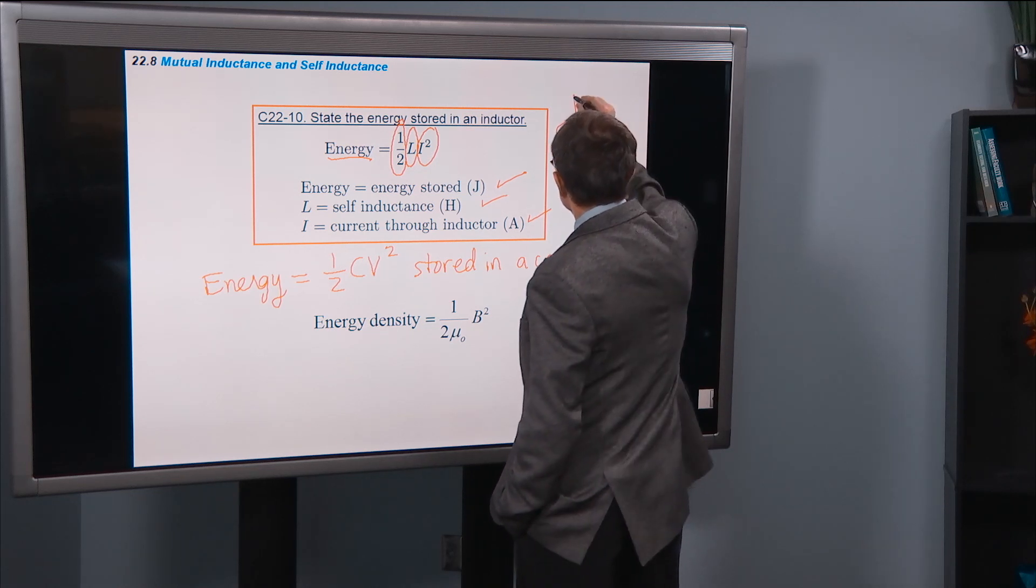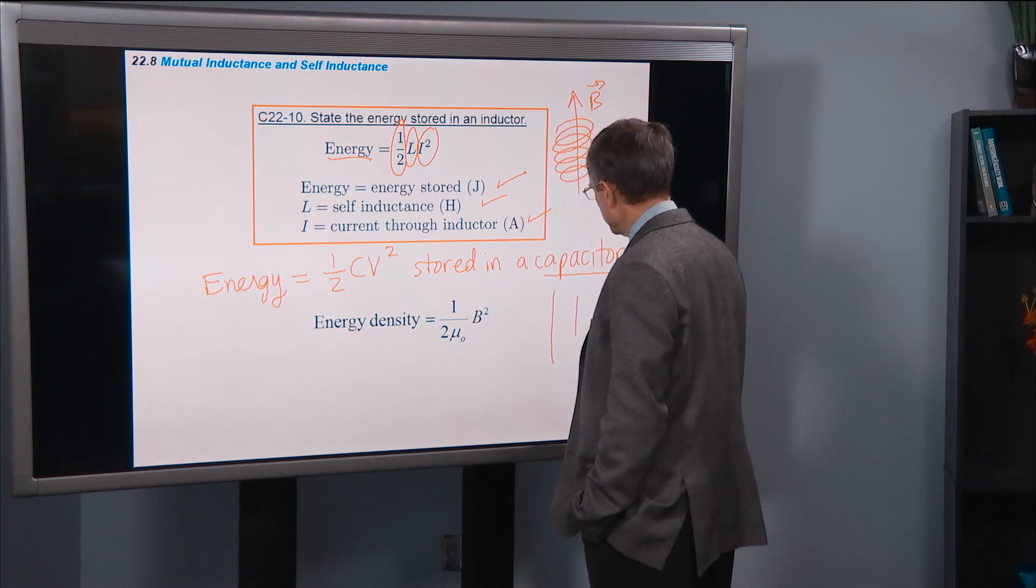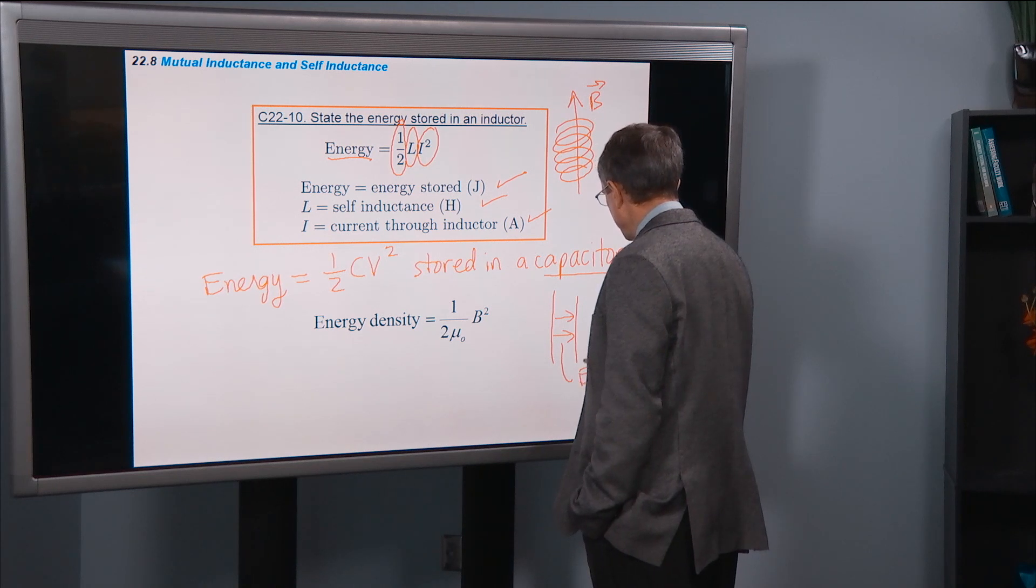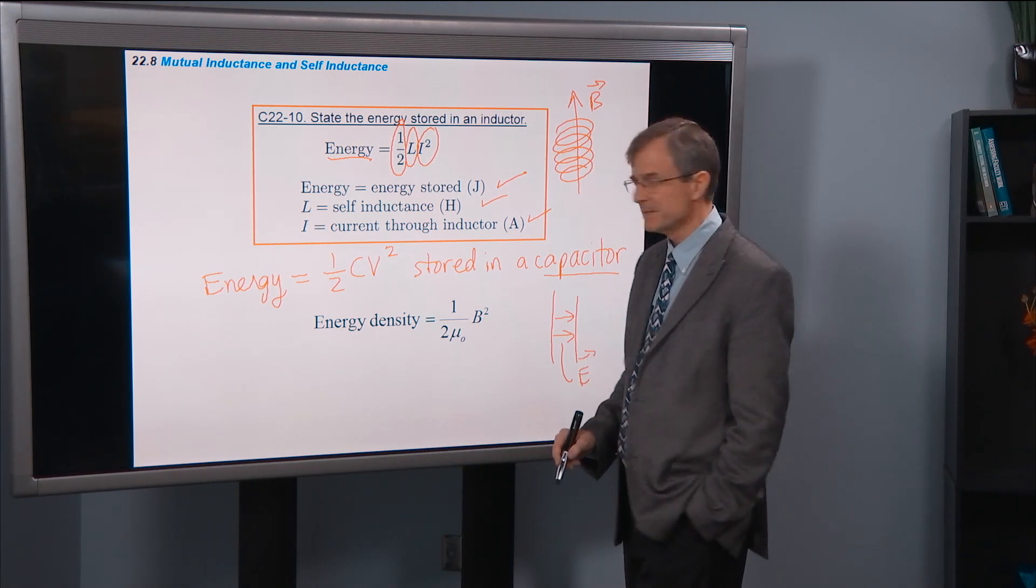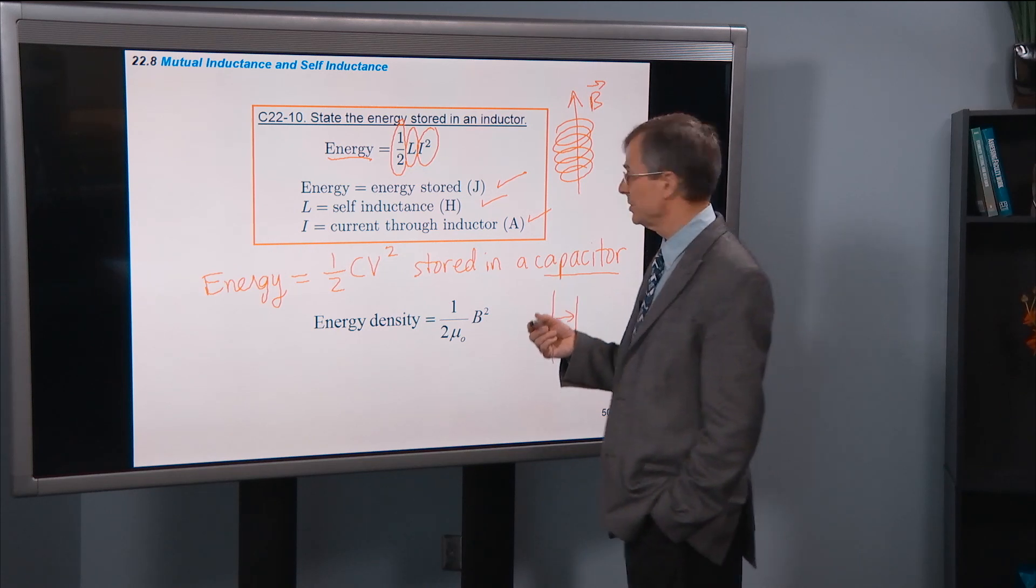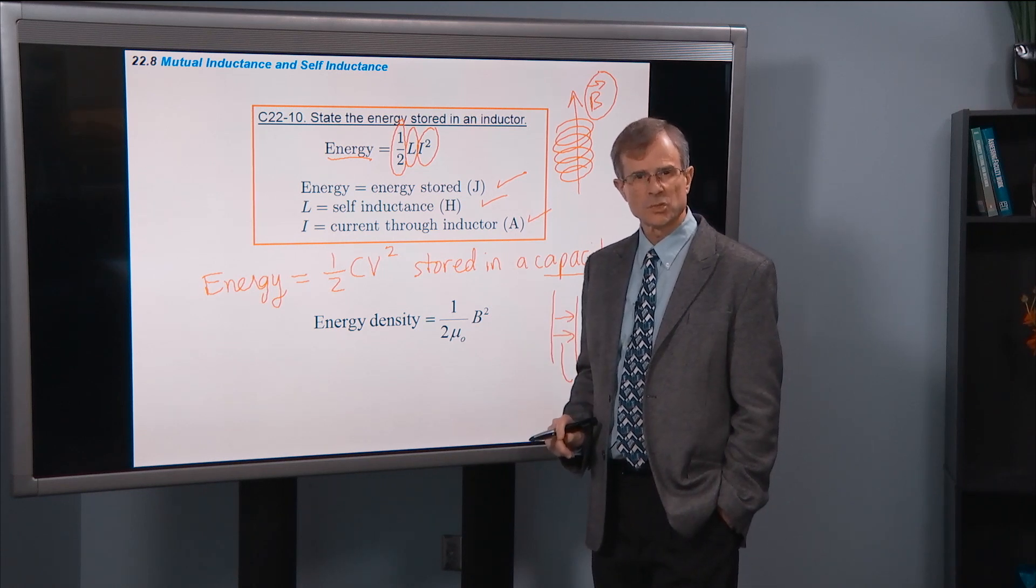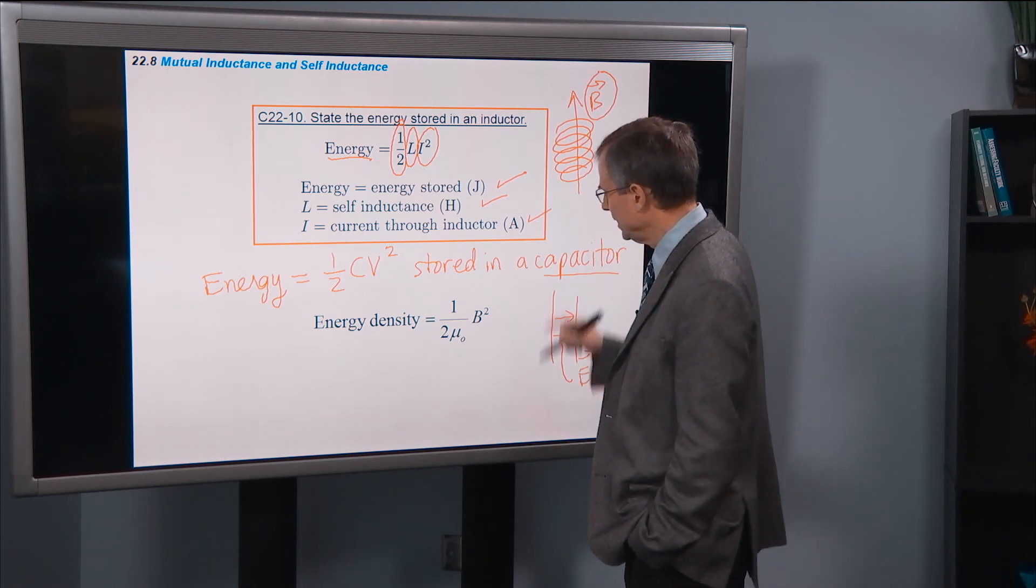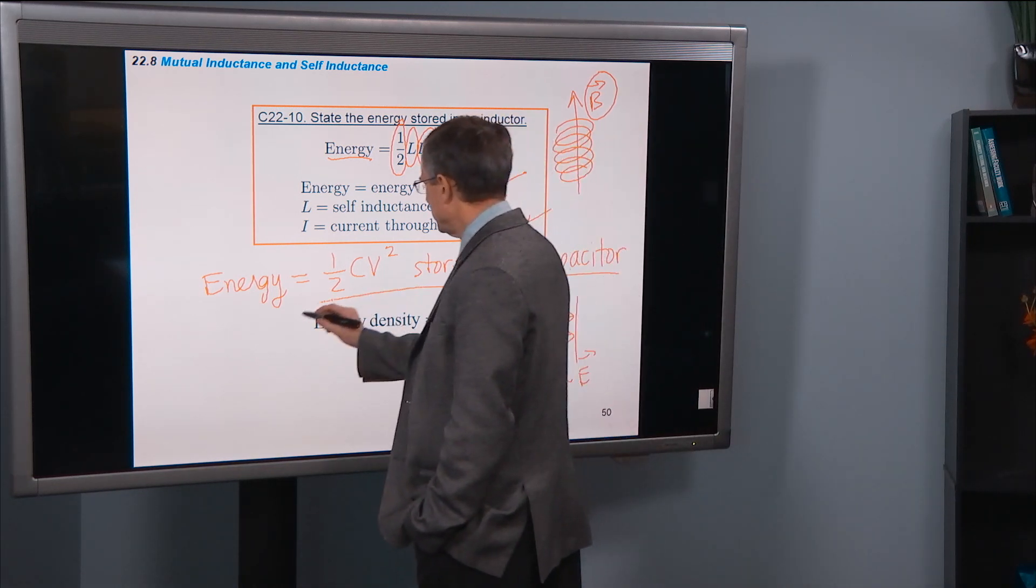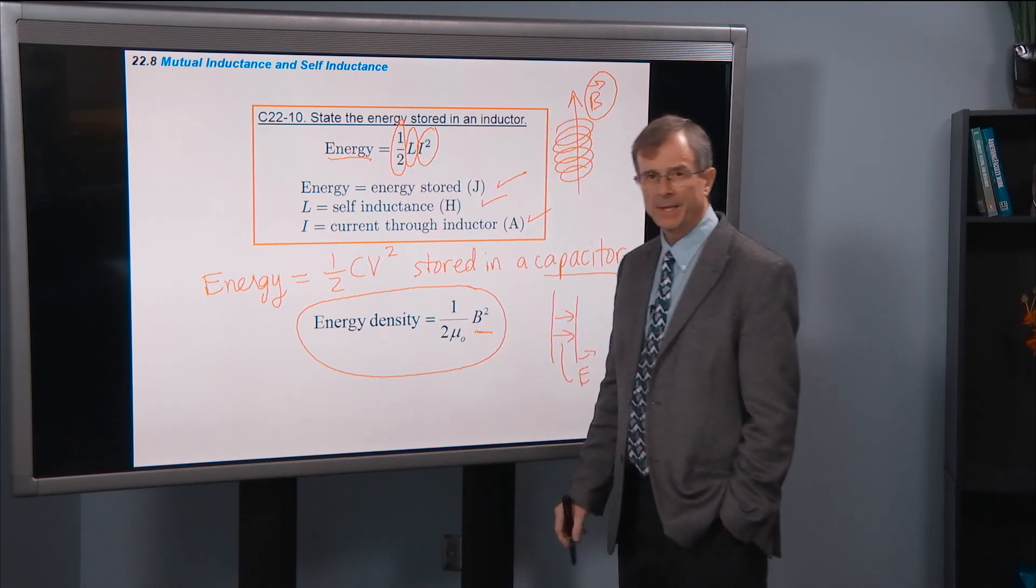So instead of, for a capacitor, the energy being stored in the electric fields between the two plates, for an inductor, you can think of the energy being stored in the magnetic field that runs through that coil. It's a solenoid. And that leads to the idea that the energy density is related to the square of the magnetic field.